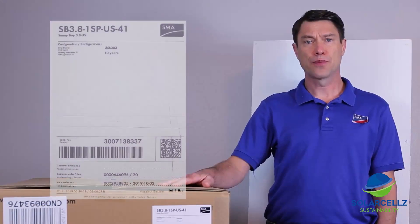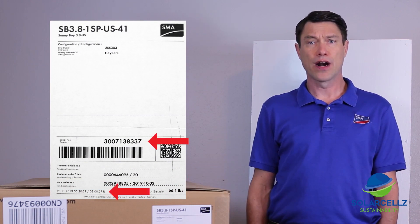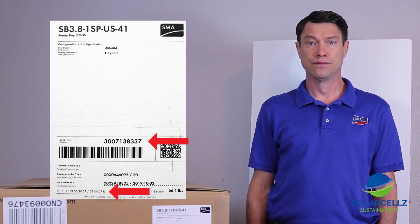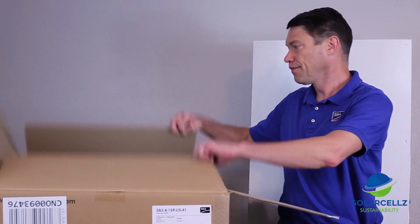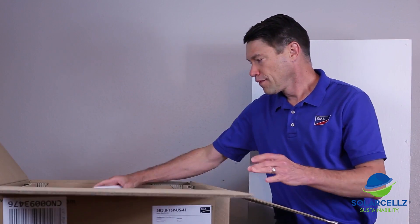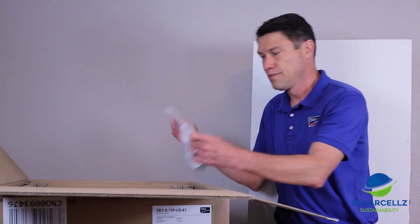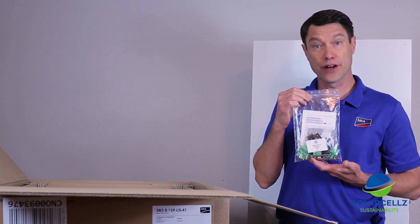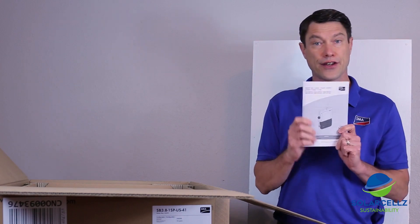Before opening the inverter box, please note that on the label on the outside of the box, you can find the device serial number, as well as the device firmware version. Inside the box, we find a production test report, the accessories bag for connection hardware, and the installation manual.